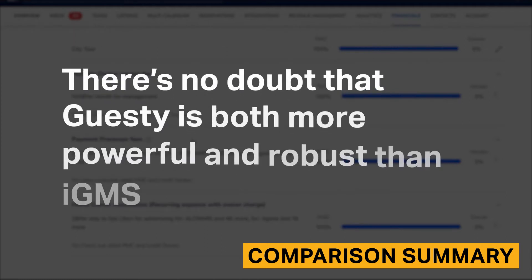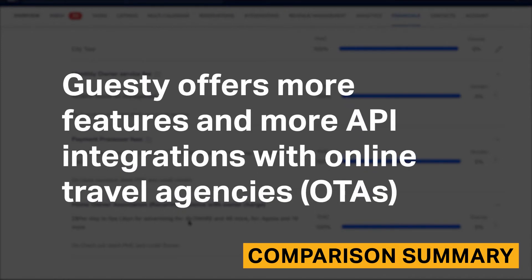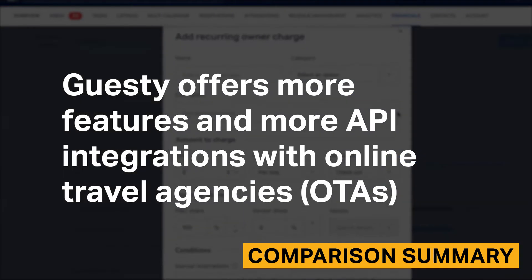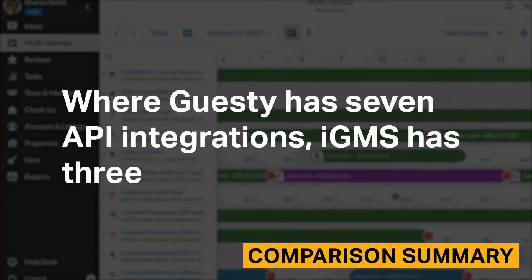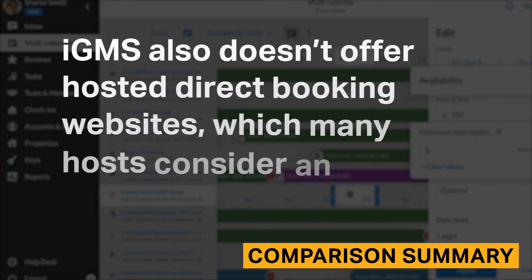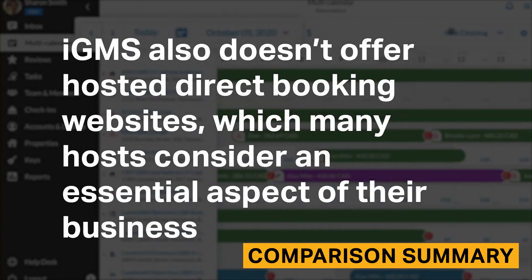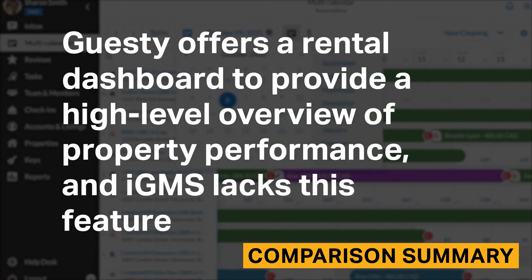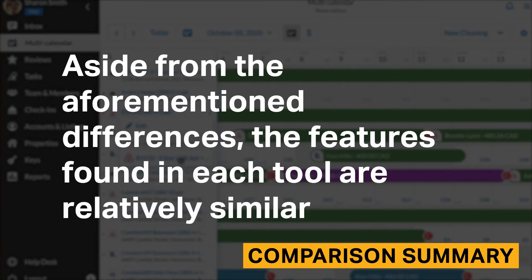There's no doubt that Guesty is more powerful and robust than IGMS. Guesty offers more features and more API integrations with online travel agencies. Where Guesty has 7 API integrations, IGMS has 3. IGMS also doesn't offer hosted direct booking websites, which many hosts consider an essential aspect of their business. Guesty offers a rental dashboard to provide a high-level overview of property performance, and IGMS lacks this feature. Aside from these differences, the features found in each tool are relatively similar.